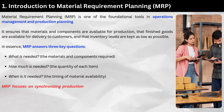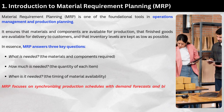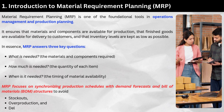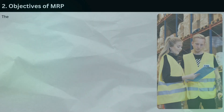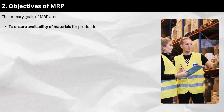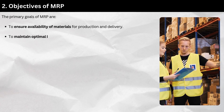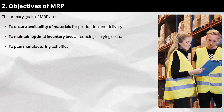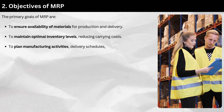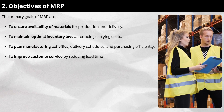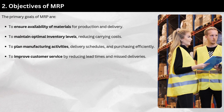MRP focuses on synchronizing production schedules with demand forecasts and Bill of Materials (BOM) structures to avoid stockouts, overproduction, and delays. The primary goals of MRP are to ensure availability of materials for production and delivery, to maintain optimal inventory levels reducing carrying costs, to plan manufacturing activities, delivery schedules, and purchasing efficiently, and to improve customer service by reducing lead times and missed deliveries.